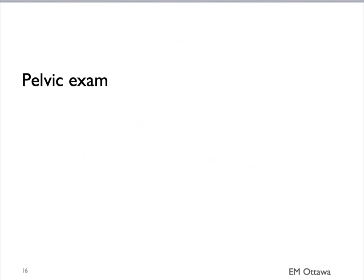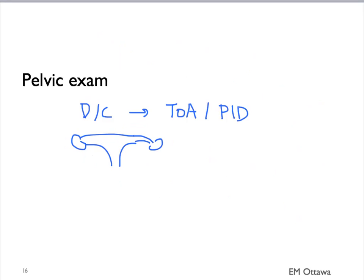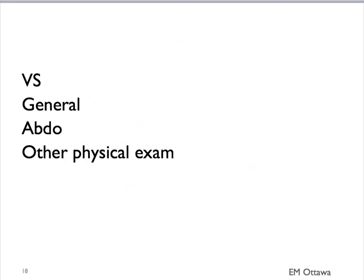On a pelvic exam, we will look for discharge suggestive of a tubo-ovarian abscess or pelvic inflammatory disease, cervical motion tenderness suggestive of ectopic pregnancy or tubo-ovarian abscess, and pelvic bleeding suggestive of an ectopic pregnancy. In summary, we've discussed the physical examination maneuvers we'd like to use in the patient with abdominal pain. In the next section, we'll discuss the workup and investigations. We hope you find this helpful. Thank you for watching.